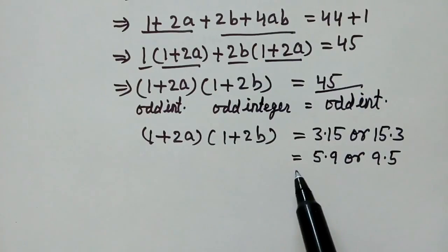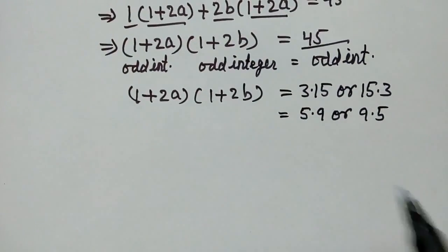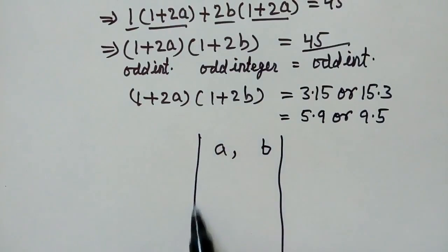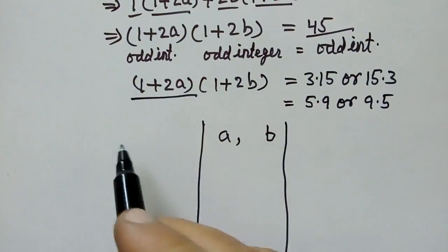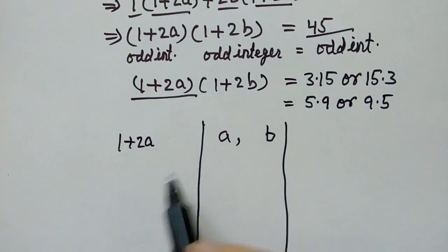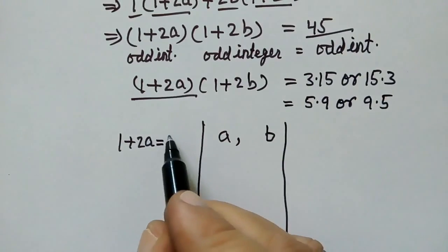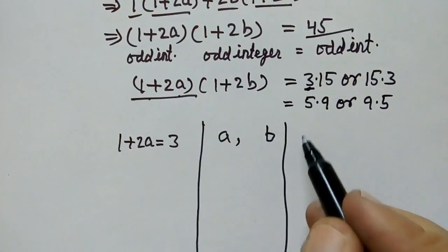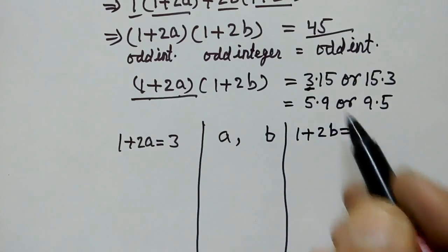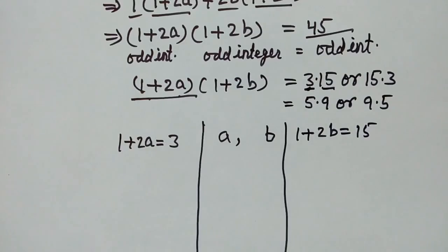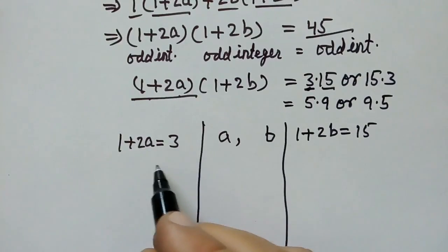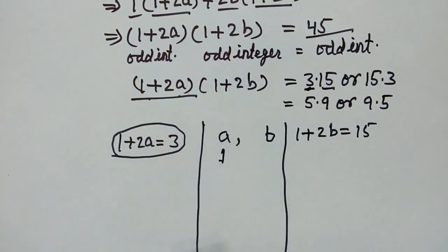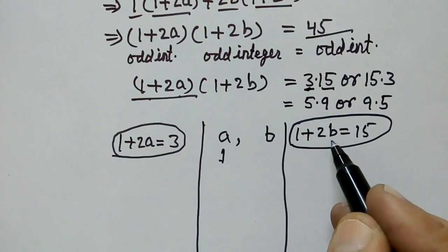Now we have to find the values of a and b. We can say: 1 plus 2a equals 3 and 1 plus 2b equals 15. From the first equation, the value of a will be 1, and from the second equation, the value of b will be 7.